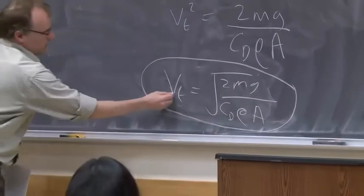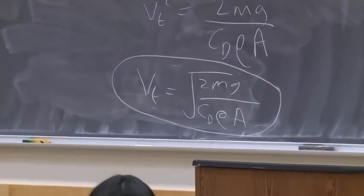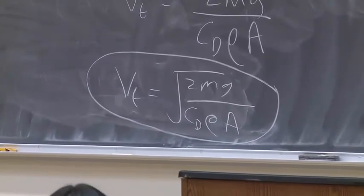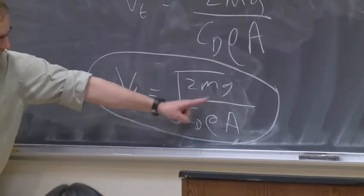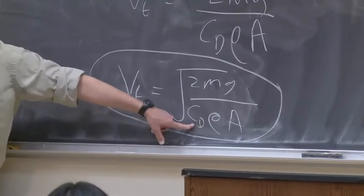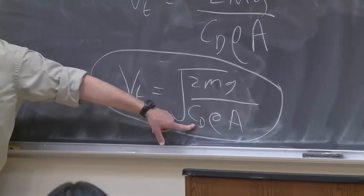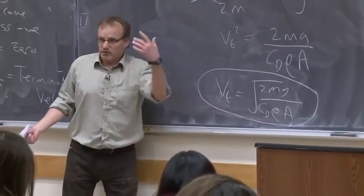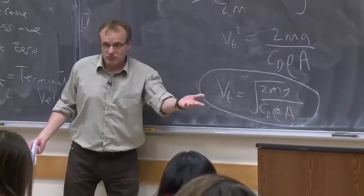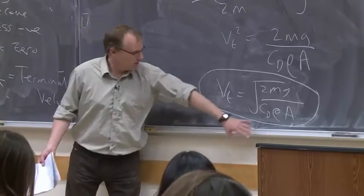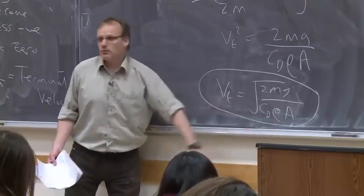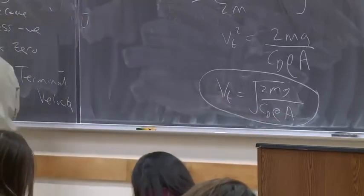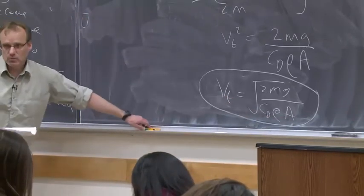It's a formula that I would give you in the exam. If we asked this in the exam, we would give you this formula. But you would typically need to estimate these things: m, cd. I would probably give you the value of cd, but you can look it up. You look up drag coefficient, all these tables come up. Rho is always going to be 1 because it's just the density of air near ground level. And a is going to depend on the object.